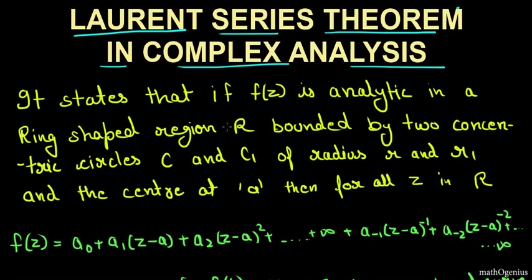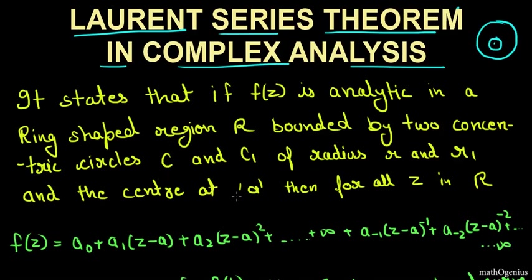This theorem states that if there is a function F(z) which is analytic in a ring-shaped region R — that is, a multiply connected region bounded by two concentric circles C and C1 — then for example this region is bounded by two concentric circles with the same center, C and C1, of radius R and R1 respectively.